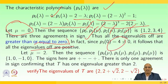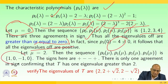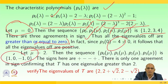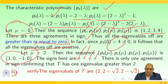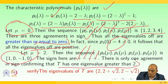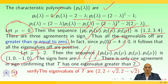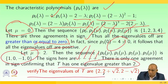Let mu equal 2. Then the sequence P_0(mu), P_1(mu), P_2(mu), P_3(mu) is 1, 0, minus 1, 0. The signs are positive, negative, negative, positive. There is only one agreement in sign, confirming that T has one eigenvalue greater than 2. Therefore, the eigenvalues of T are 2 plus root 2, and 2 minus root 2.